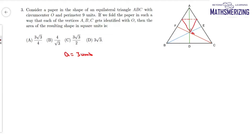Suppose A comes to O; we do the same for B, and we fold C also. We need to find the area of the resulting shape.